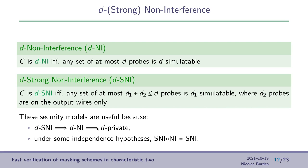From this simulatability property, we have this non-interference and strong non-interference. We say that a gadget is d-NI if and only if any set of at-most d probes is d-simulatable. For the strong non-interference, it's a little bit different because we are regrouping the probes into two sets. One that are on the internal wires of the circuit, and some probes that are on the output wires only of the circuit.